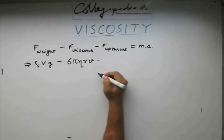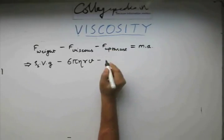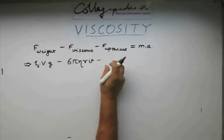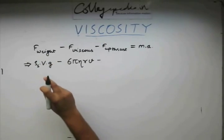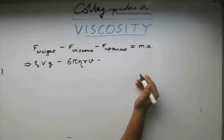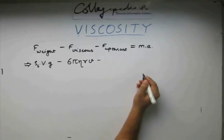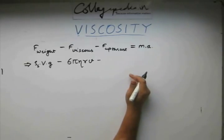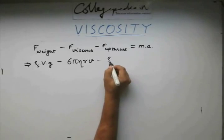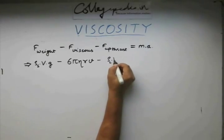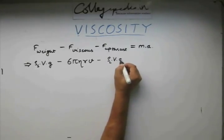Then, the upthrust force. For this we have the mass of the fluid displaced by this solid object times the acceleration due to gravity, which gives us the weight displaced of the fluid. This is going to be ρl times v times g.